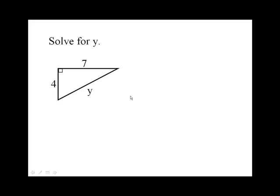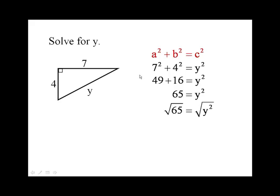Now let's do another one. Let's solve for Y in this case. So the theorem is A squared plus B squared equals C squared. That gives us 7 squared plus 4 squared equals Y squared. So 7 squared is 49, 4 squared is 16. So 49 plus 16 equals Y squared. So 65 equals Y squared. Take the square root of both sides. And the absolute value of Y is square root of 65. So Y is square root of 65 or negative square root of 65. Just like the last one, it can't be negative. So Y is approximately 8.1 units.